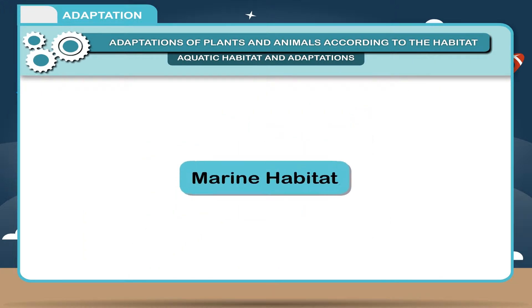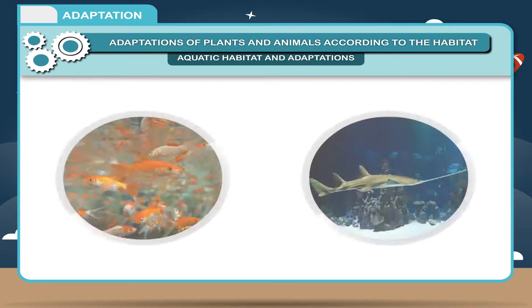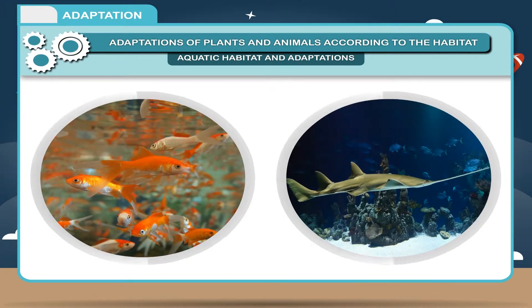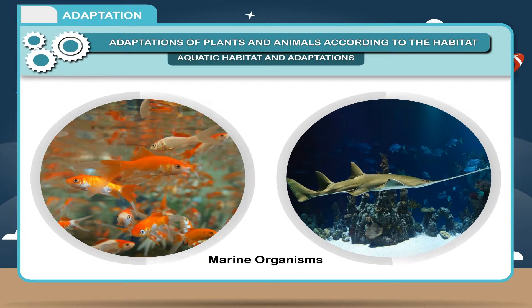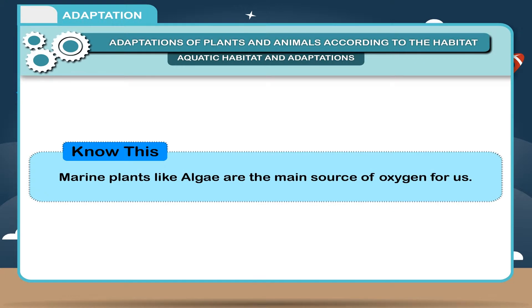Marine Habitat refers to saltwater habitats in sea and ocean. The organisms living in marine habitats are known as marine organisms. Many sea animals have streamlined bodies to help them move easily in water. Marine plants like algae are the main source of oxygen for us.